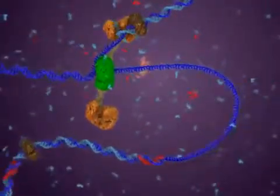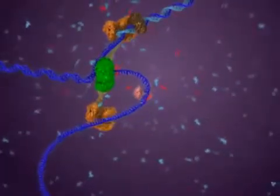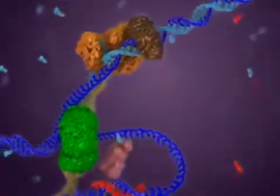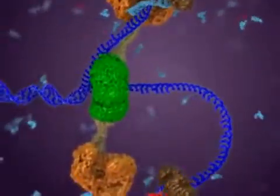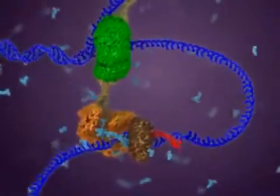Because strands in a DNA double helix run in opposite directions, the new strands must be made in different ways. One new strand, the leading strand, is built continuously. The other new strand, the lagging strand, is built in pieces.